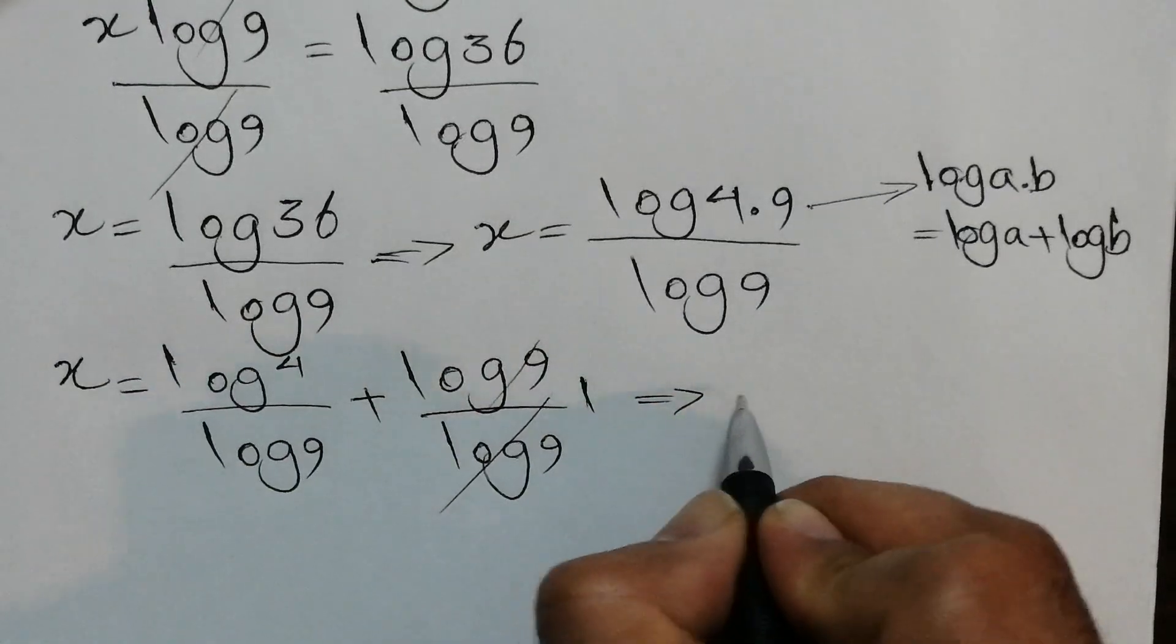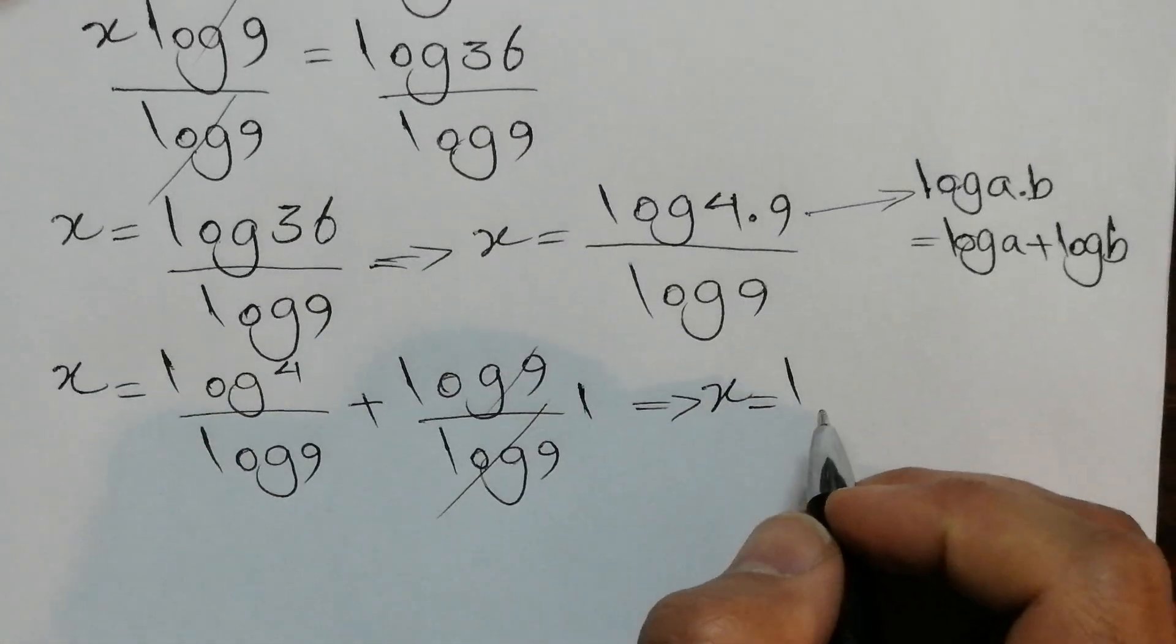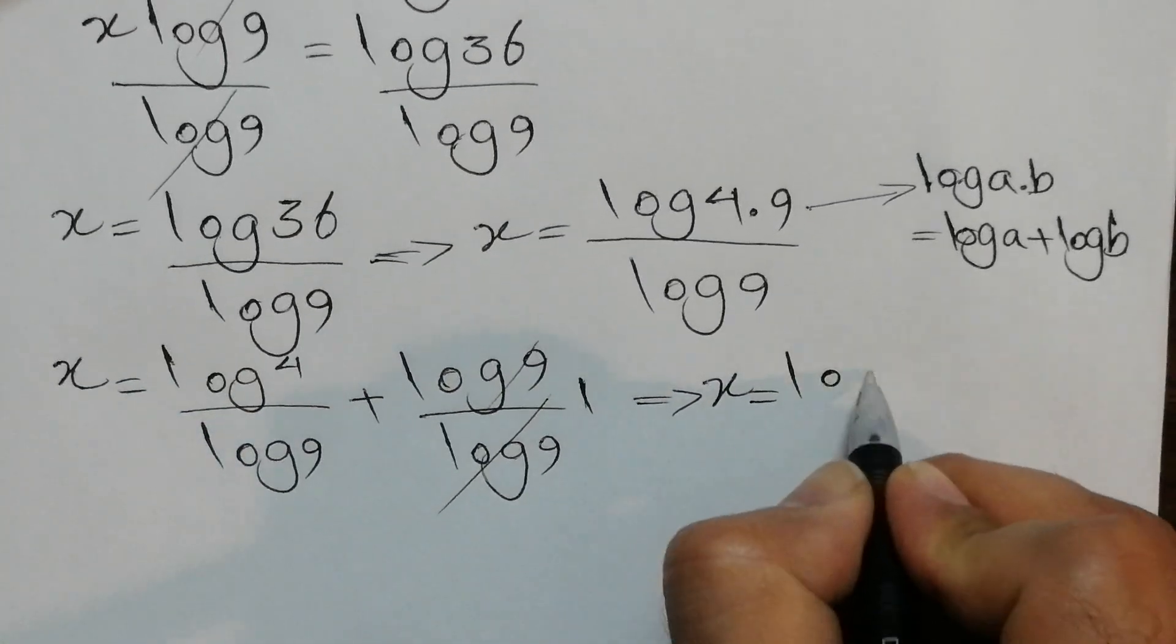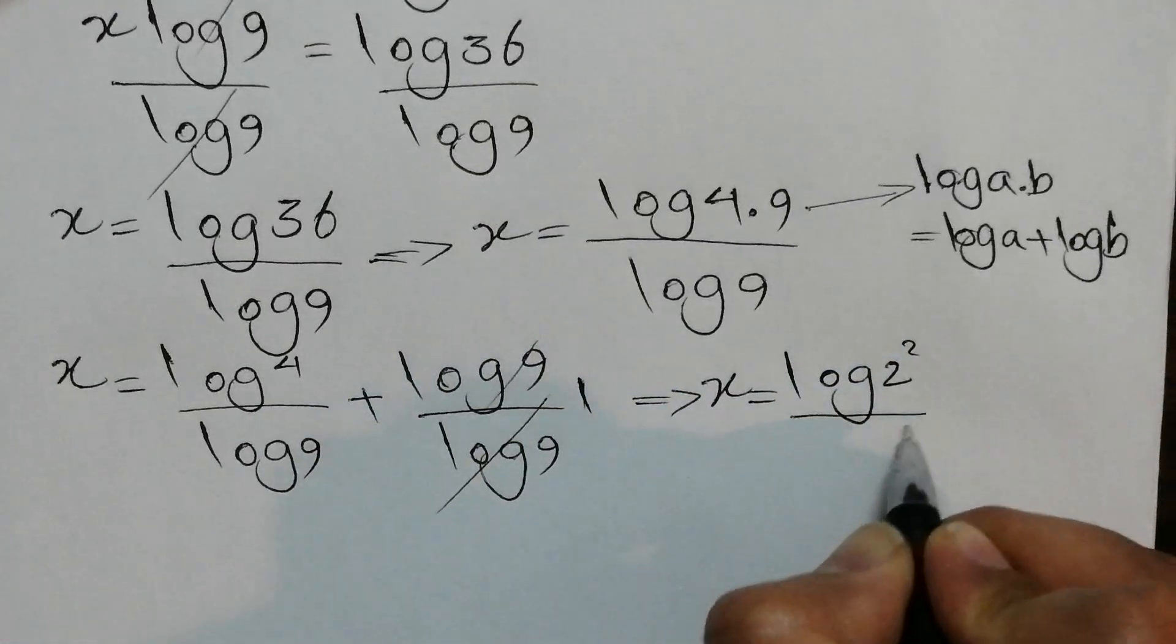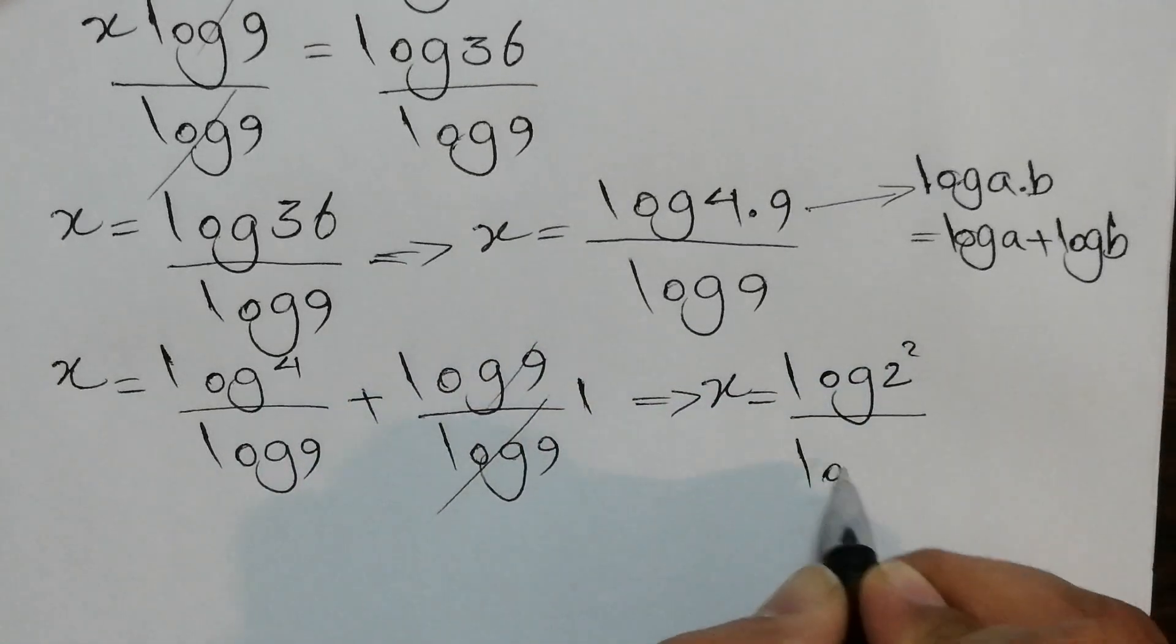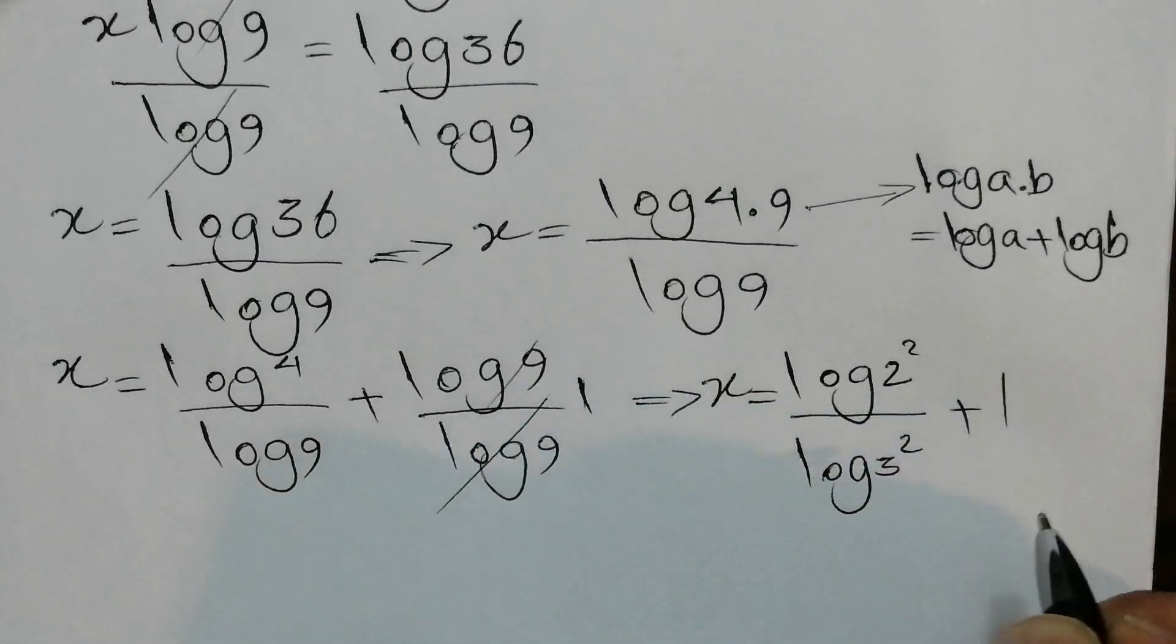We can say x equals, so we can rewrite 4 as 2 squared, and we can rewrite 9 as 3 squared plus 1.